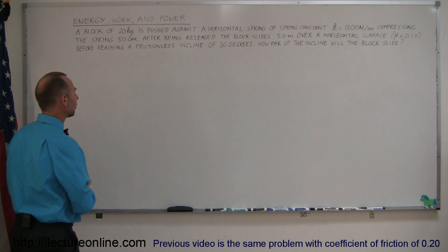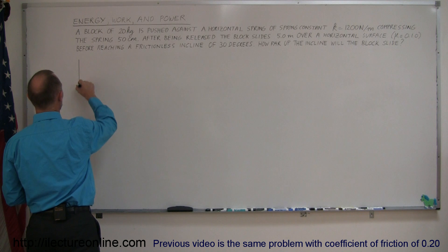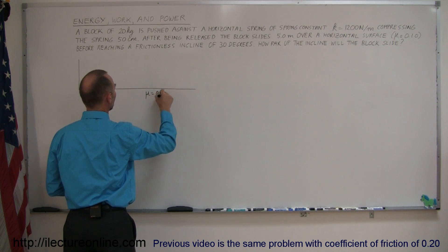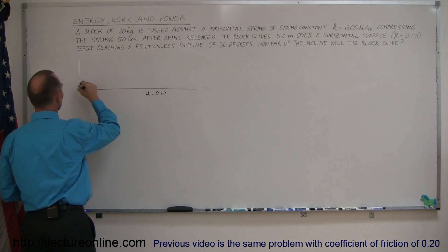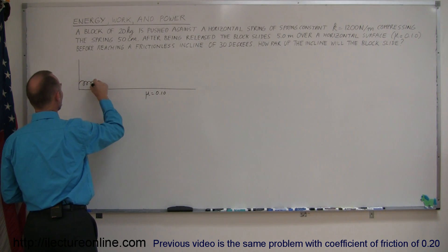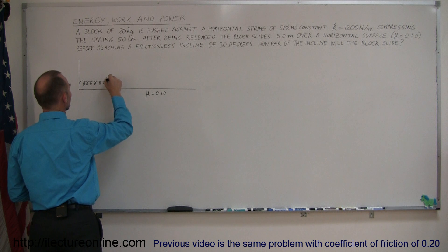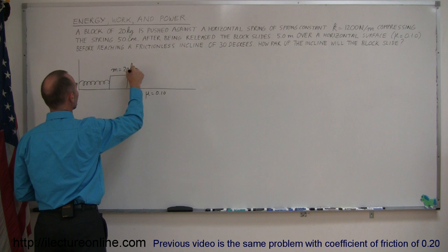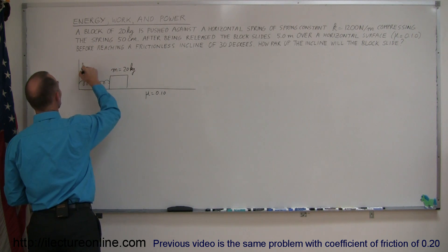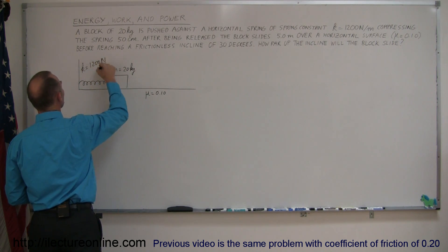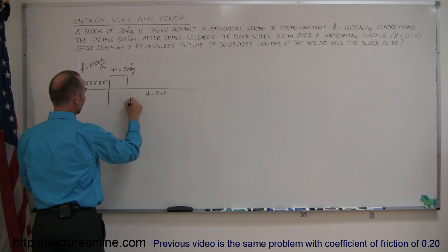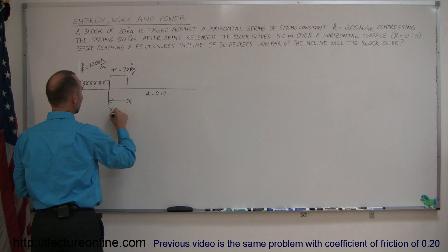So let's draw a picture of this to see what it looks like. We have a horizontal surface with a coefficient of friction mu equals 0.1. The block is being pushed up against the spring, compressing the spring. Here's our block — the mass is equal to 20 kilograms, and the spring constant k is equal to 1,200 newtons per meter. The block has been pushed into the spring, compressing the spring a distance x equal to 0.50 meters.